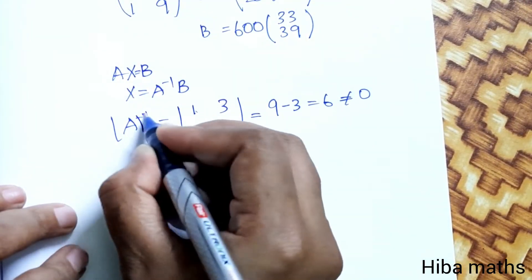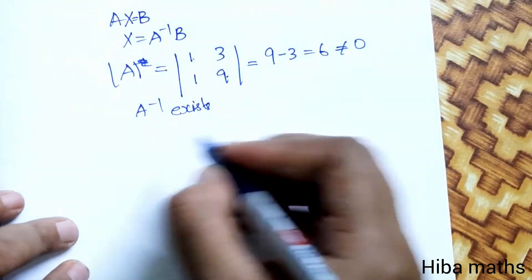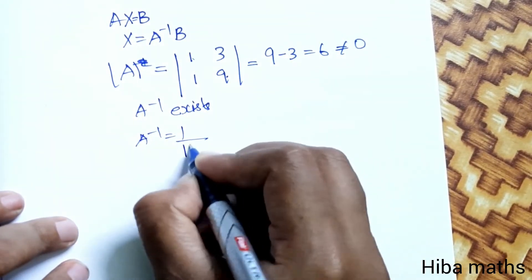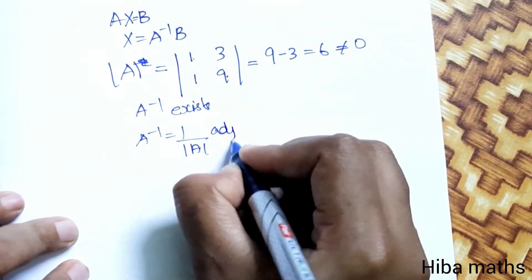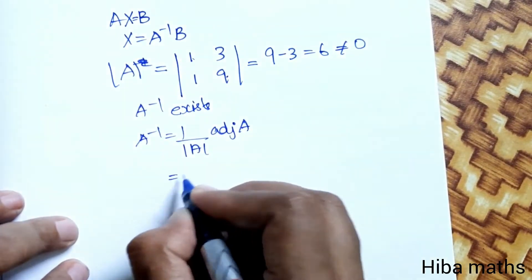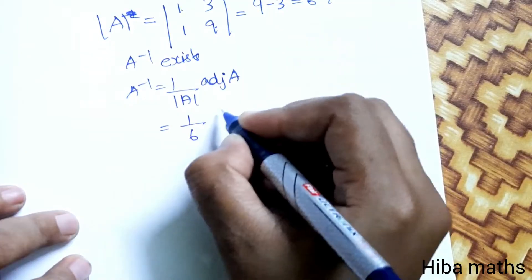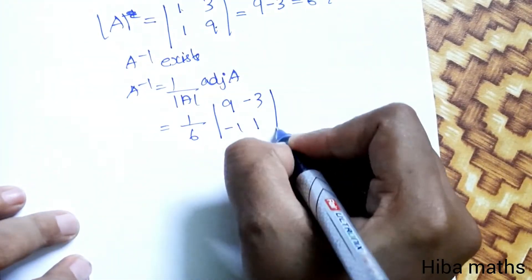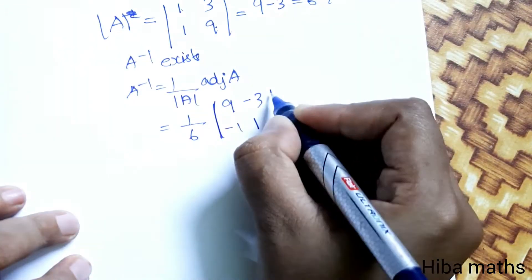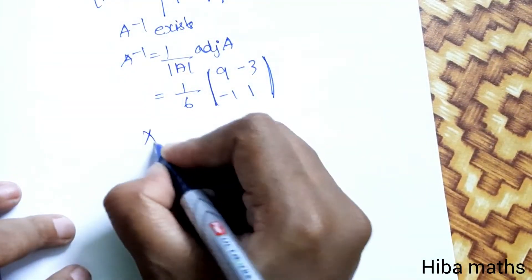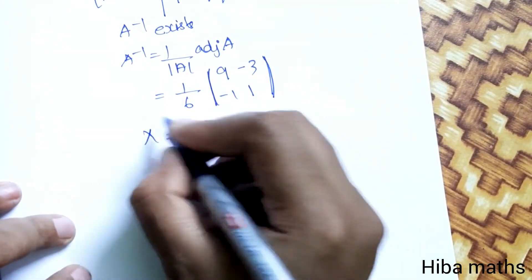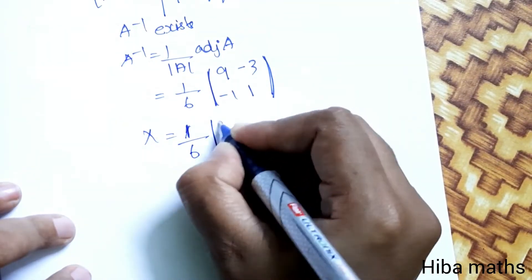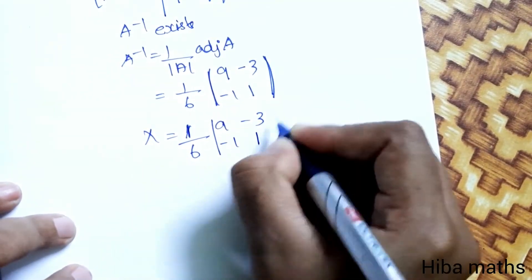We calculate the modulus of A. Now A inverse uses the formula: 1 by modulus of A into adjoint of A. That equals 1 by 6. The adjoint of A is [9, -3; -1, 1]. So A inverse equals 1 by 6 times [9, -3; -1, 1].